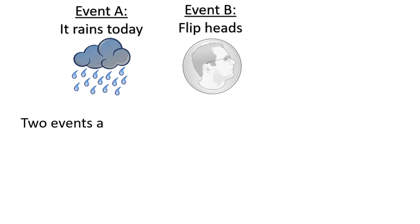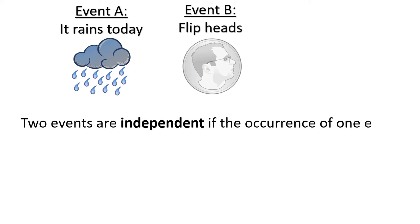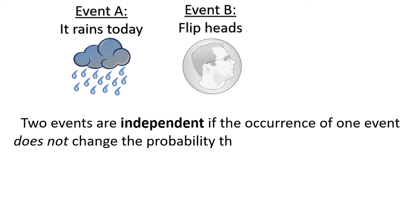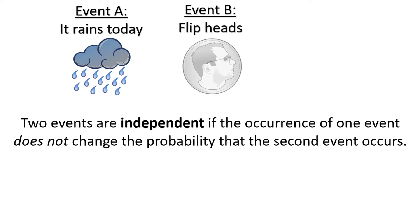Two events are independent if the occurrence of one event does not change the probability that the second event occurs. If it rains today, that has no impact on the probabilities associated with my coin, so we know that events A and B are independent.